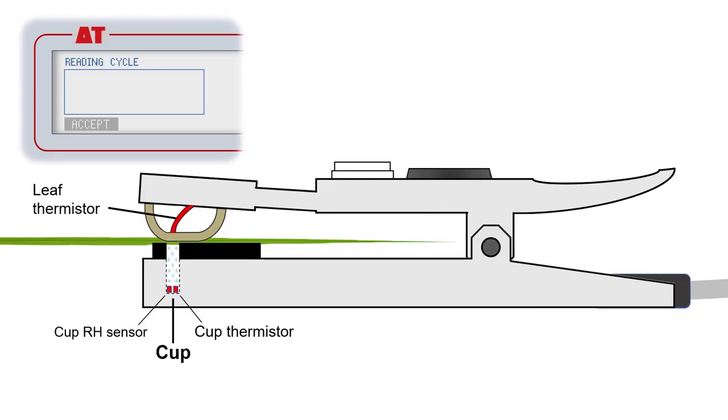Once the head is clipped onto a leaf, the AP4 measures the rate at which humidity increases inside the cup and compares it to rates obtained from the calibration reference plate. This enables the AP4 to calculate and display the stomatal conductance measurement.